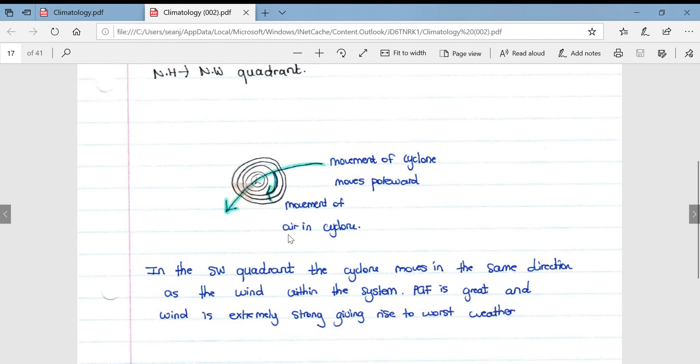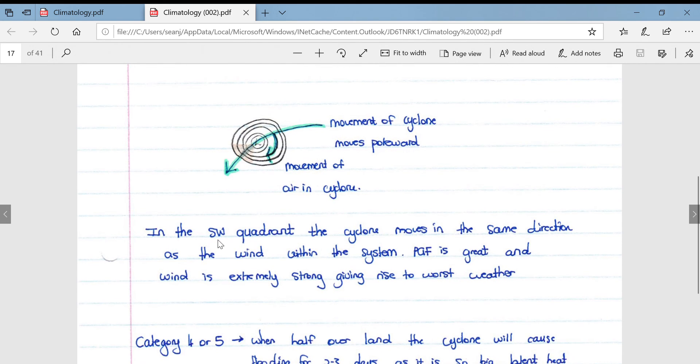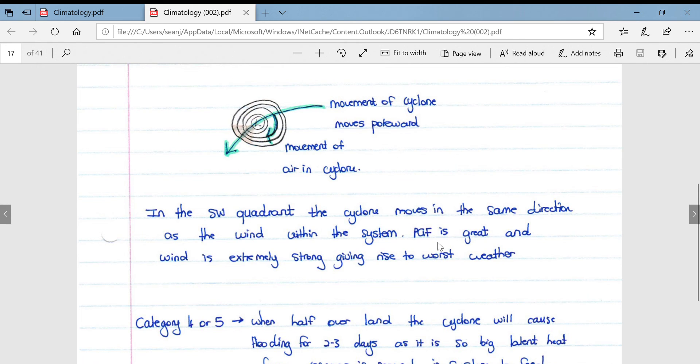If we look at exactly why there's an active quadrant, more specifically in the southern hemisphere, in the southwestern part of the tropical cyclone you've got your movement of cyclone which is moving poleward indicated by this arrow. The movement of air in the cyclone is going obviously in a clockwise direction because it is a low pressure in the southern hemisphere. And then in the southwestern quadrant, the cyclone moves in the same direction as the wind within the system. The pressure gradient force is greatest and the wind is extremely strong, giving rise to the worst weather.